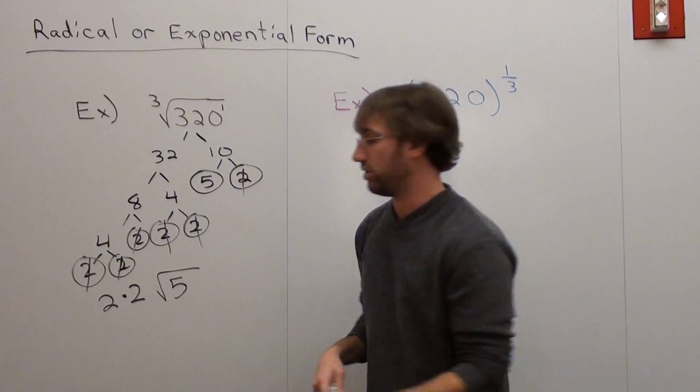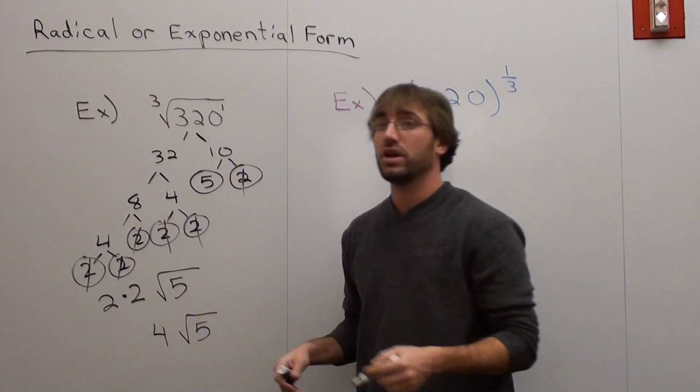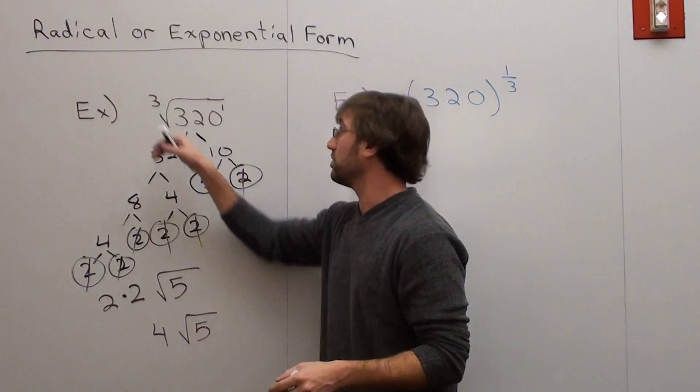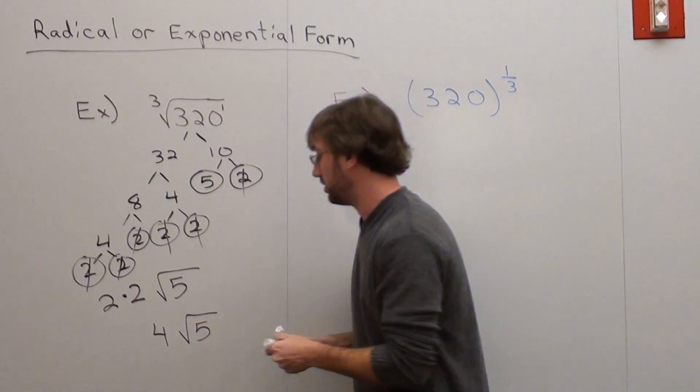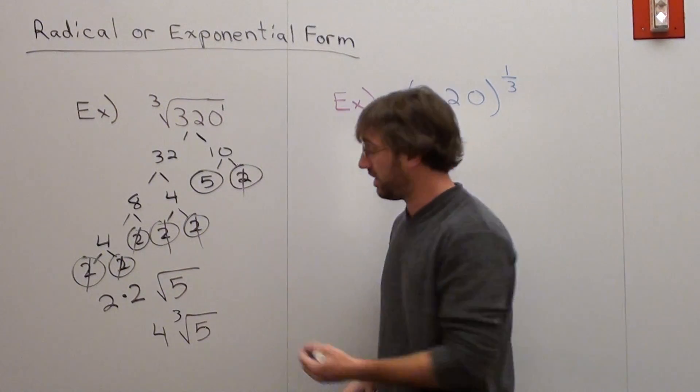Students put this answer down. Oh, it's four radical five. Well no, we didn't use a square root five. We used a cube root five. So make sure you're specific on that too. It should be four times the cube root of five. And that's the answer.